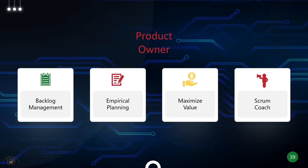In a Scrum team, you should have only one Product Owner, and they should be different from the Scrum Master. There are teams where they try to use Scrum Master and Product Owner interchangeably — that's a complete no-no. They should be completely separate, as they have completely different responsibilities. They should not be the same person.